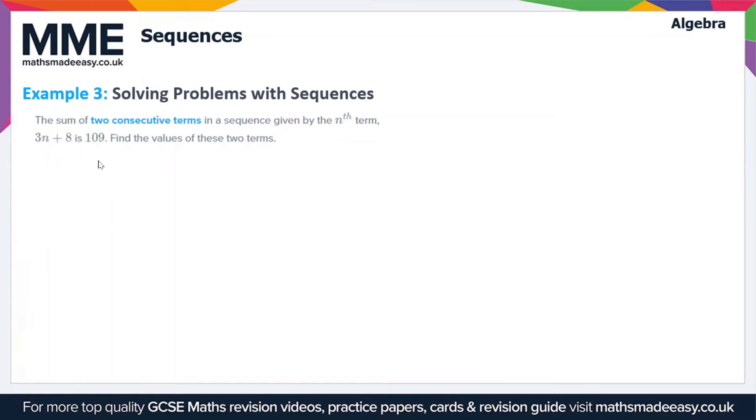3n plus 8 is going to give us one of the terms, and we're looking for two consecutive terms. So the term after 3n plus 8 is going to be 3 lots of n plus 1 plus 8. We're adding these two terms together, and that gives us a sum of 109. So we need to just expand out the bracket in this expression and collect like terms. We've got 3n plus 8 still here, plus 3 lots of n plus 3 plus 8 is equal to 109.